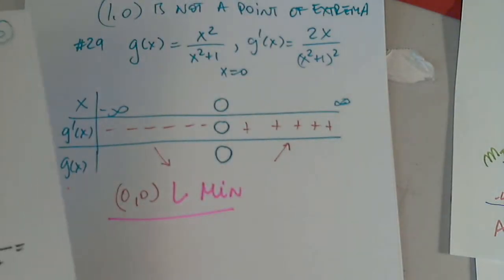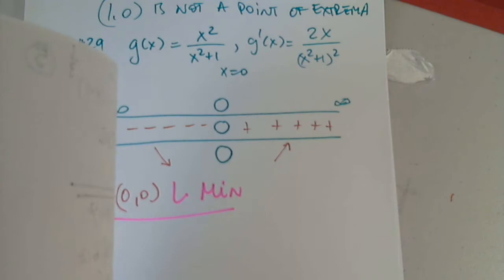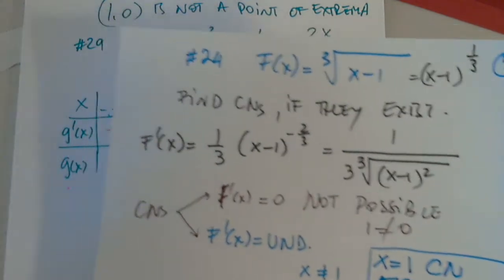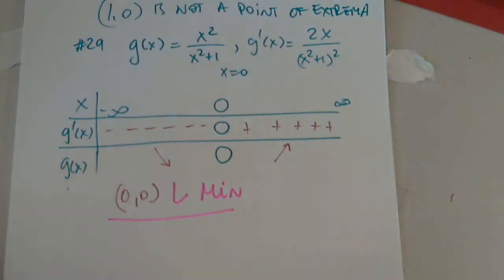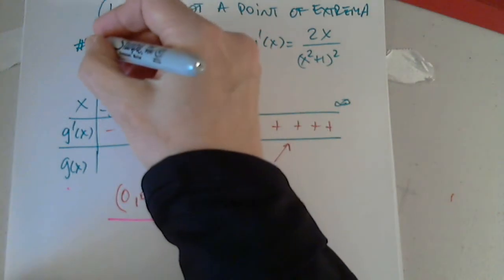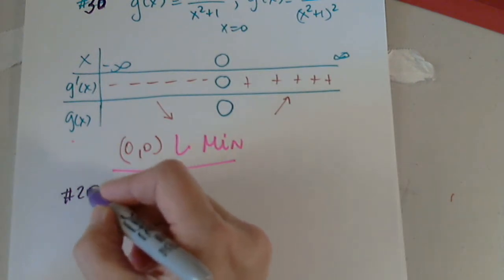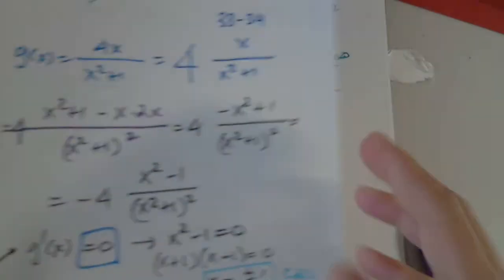So that was... no, that was not 29. Was that 29? Yeah, that was... No, this was 30. We did 30 and then we came back to 29. Sorry, sorry, sorry. Okay, so now 29.